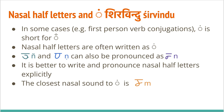Recap: In some cases — like first person verb conjugation — sirvindu is just a short form for chandrabindu; we're just being lazy. Nasal half letters are often written as sirvindu. When that is the case, find the nasal letter, and if the letter after the nasal half letter belongs to the same barga, replace the sirvindu with that nasal half letter. Two other half letters that are difficult to pronounce can be replaced with the na sound. In most other cases, sirvindu represents half na, half anna, or half ma.